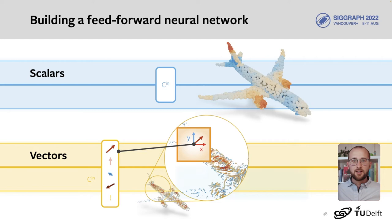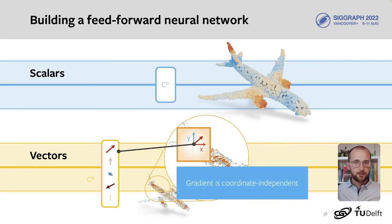However, each vector feature is the result of coordinate-independent operators. Gradient and divergence analyze functions and vector fields. They don't depend on the coordinate system that is used to encode their input or output. We could pick any coordinate system we like.